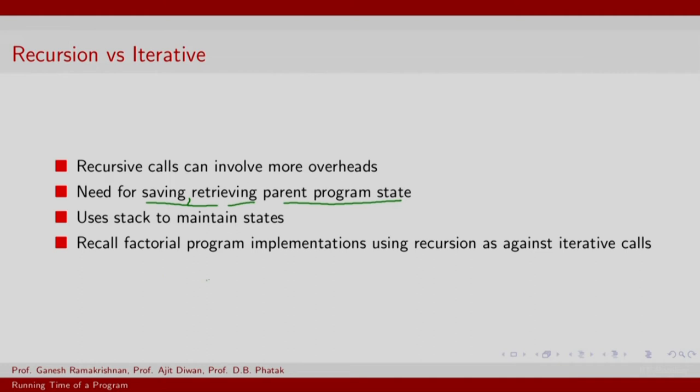So you can recall the factorial program. One was a recursive call: fact n is n times fact of n minus 1. This is a recursive call. You can also have an iterative version of the program which is equivalent, where you iterate over indices i equals 1 to n.